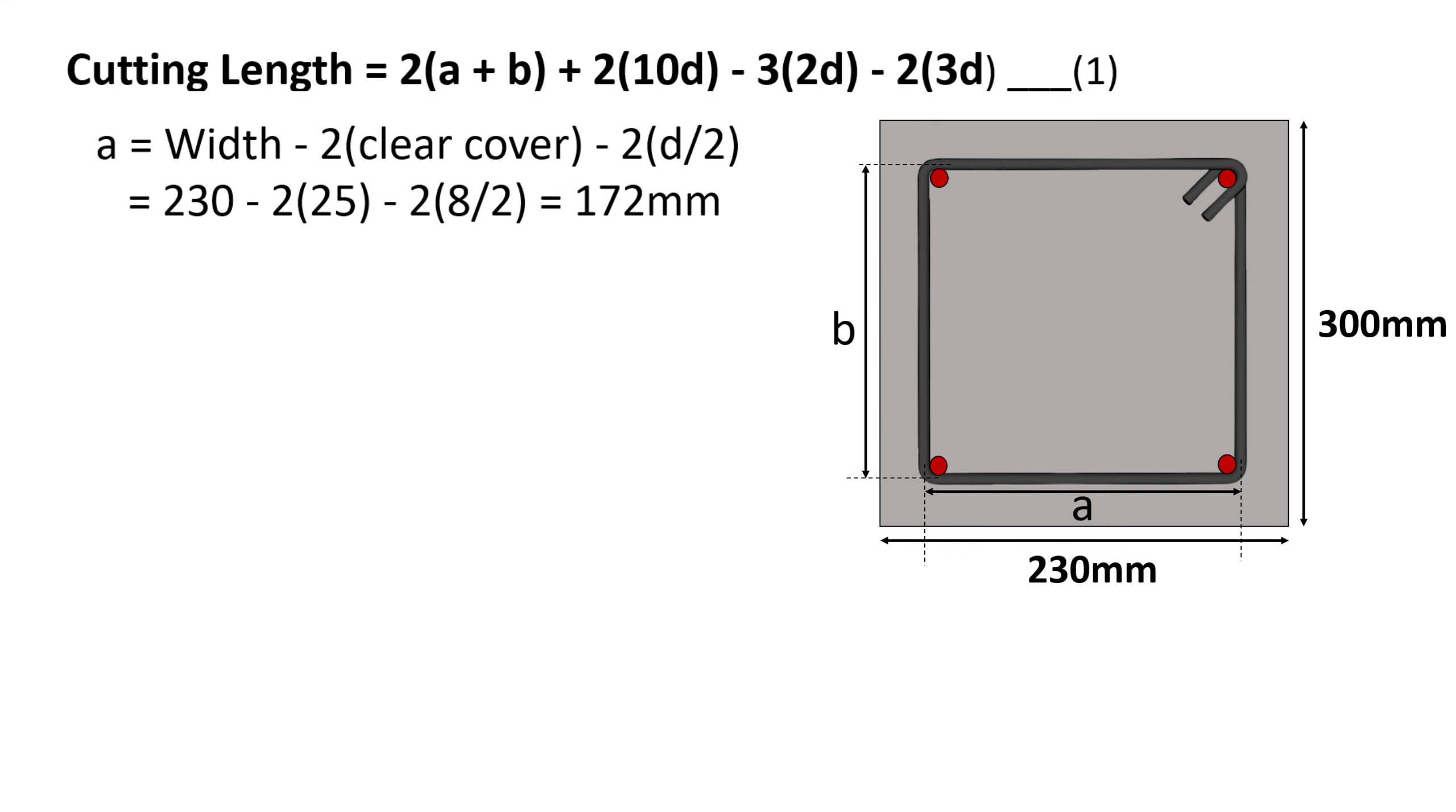The value of a can be calculated using the formula: width of beam minus 2(clear cover) minus 2(d/2), where d is the diameter of the stirrup. On substituting these values, a equals 172 mm.